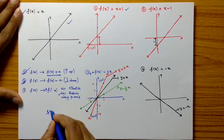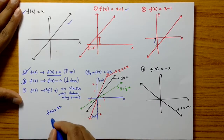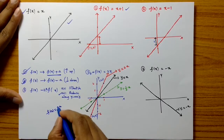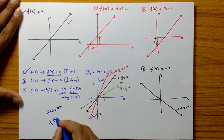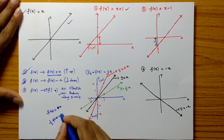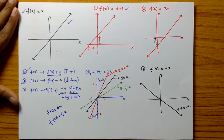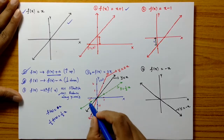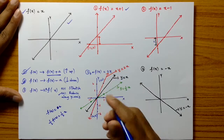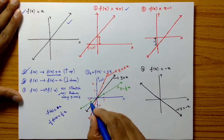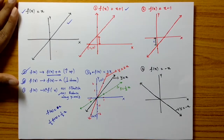So f of x equals 2x is the stretched graph, and f of x equals x is the original graph. When we multiply by 1/2, which is less than 1, the graph reduces. This is the graph of y equals 1/2 times x.